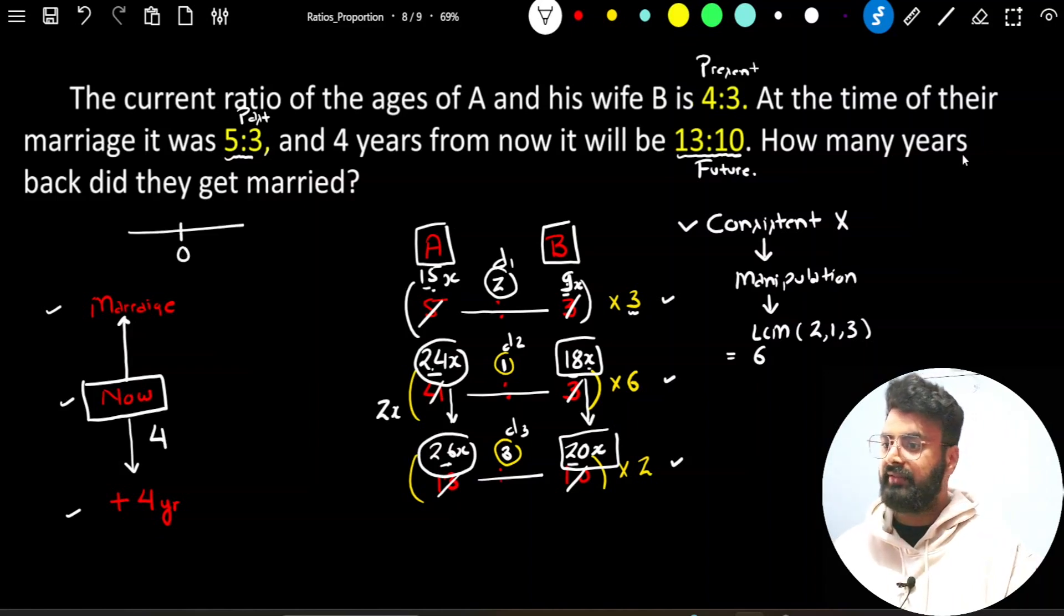ये जो change आया 2x का, ये कितने time में आया? Present से 4 साल आगे, 4 years. Present means number line में 0, और हम 4 years आगे का देख रहे हैं तो ये difference कितना हुआ, 4 years का। So 2x actually में, किसके equivalent है: 4 years के। Very easy, if 2x is equivalent to 4 years, can you calculate the value of x? The value of x must be 2.